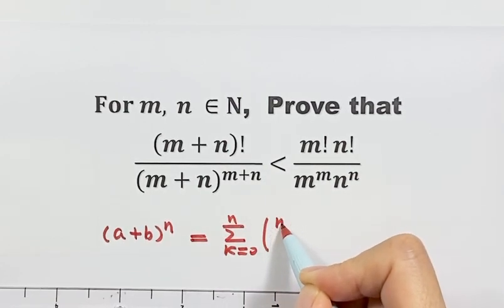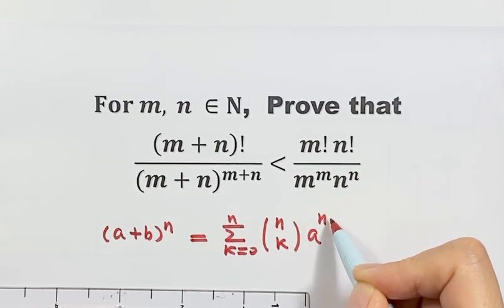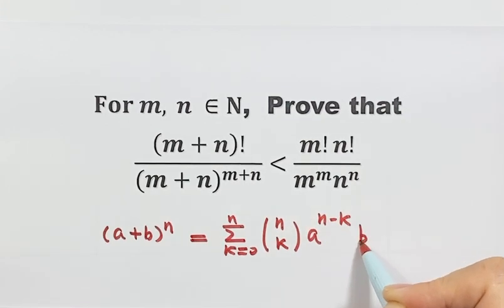Then we have n choose k, times a to the power (n minus k), times b to the power k.